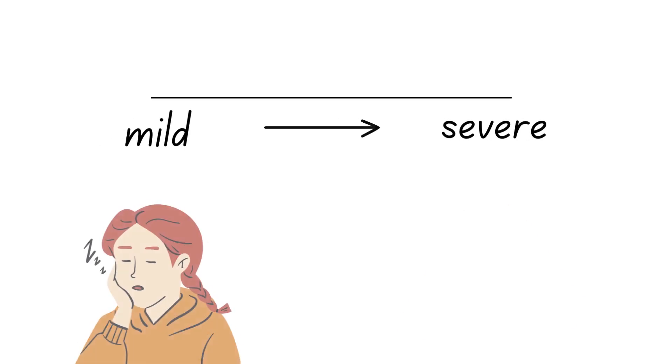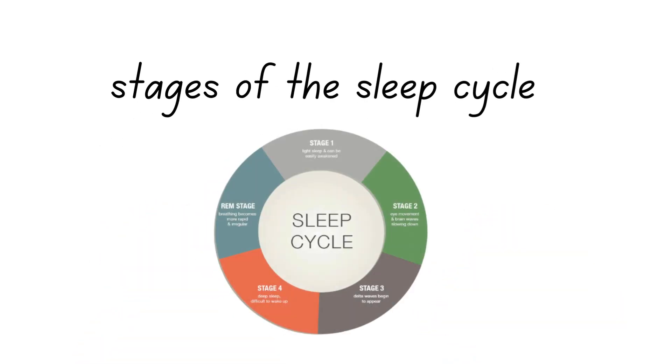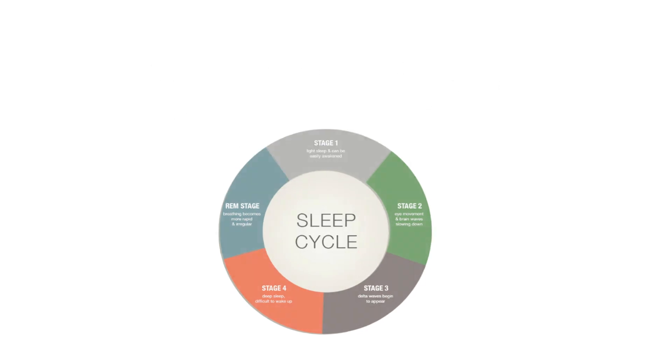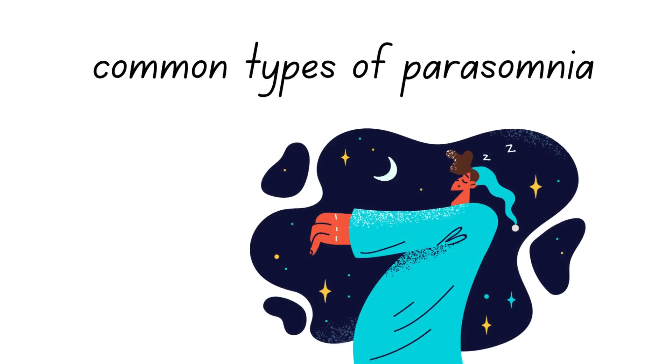These episodes can range from mild to severe and often occur during specific stages of the sleep cycle. Common types of parasomnia include sleepwalking, one of the most well-known types.